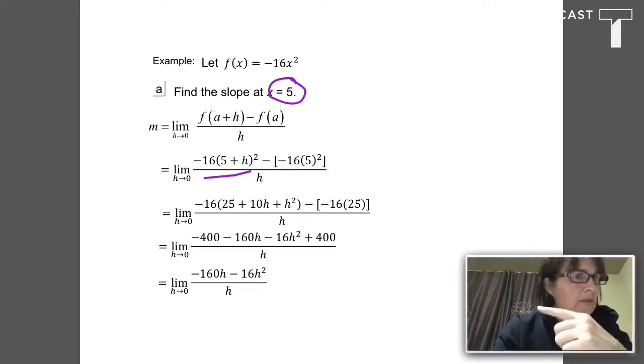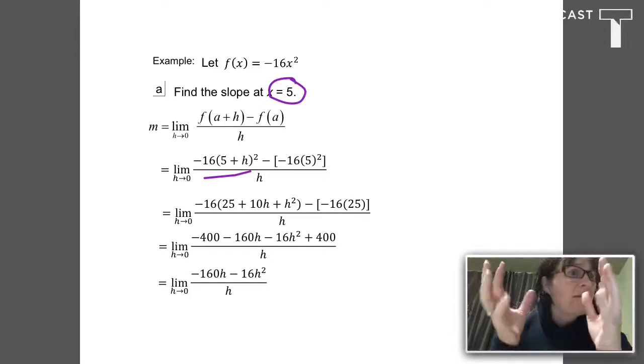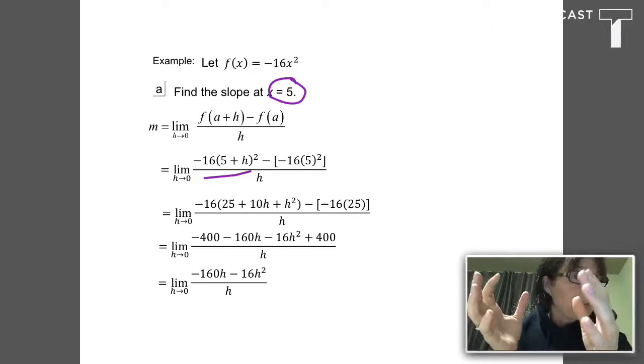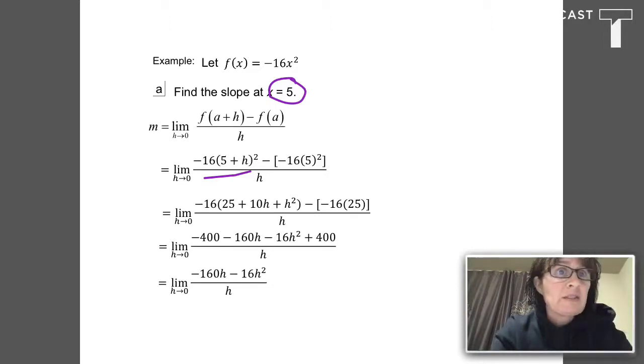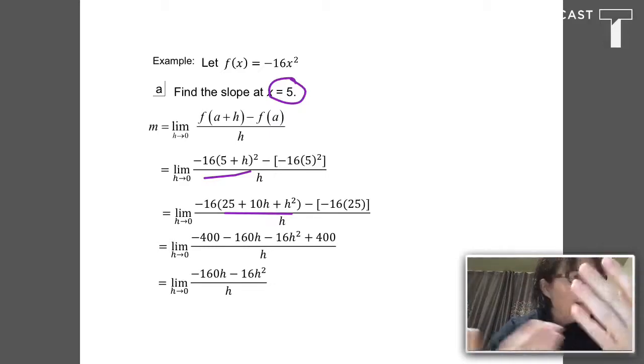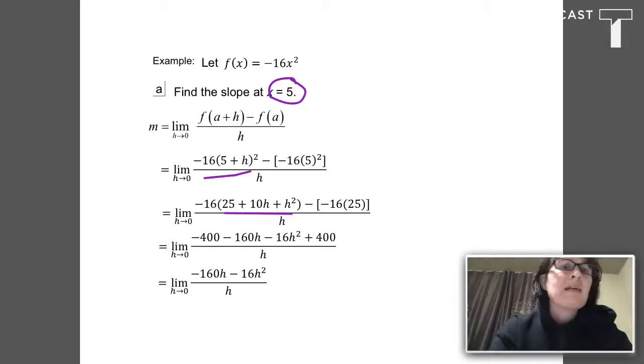We talked in the last slide about making sure that if I need to square 5 plus H, I'm going to write 5 plus H times 5 plus H. It takes four multiplications. You can see I expanded that here. And I can do the algebra up in the numerator until I get to this place, negative 160 H minus 16 H squared all over H.